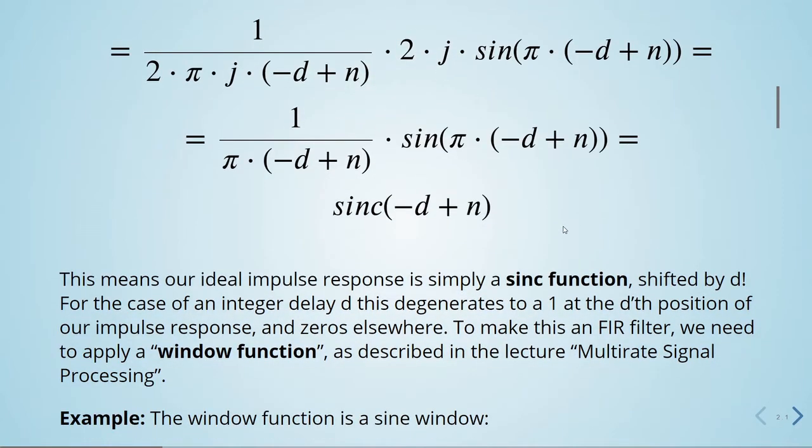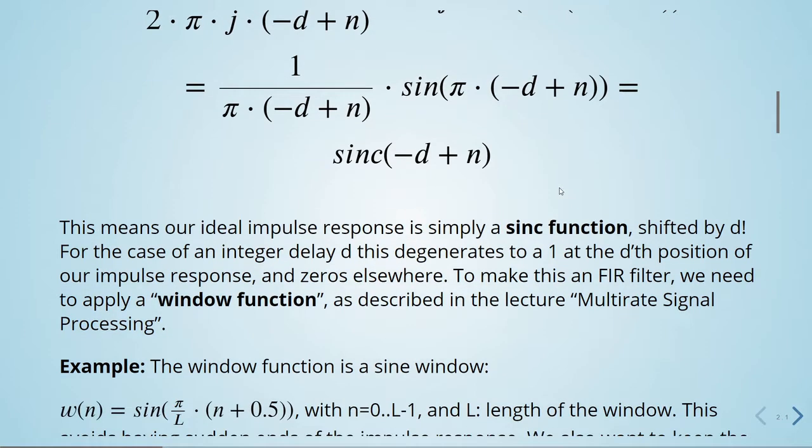So for the case of an integer delay d, this degenerates to a 1 at the dth position of our impulse response and zeros elsewhere. So we need to make this an FIR filter, and for that we will apply a window function. This is also described in the lecture multirate signal processing.